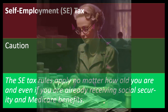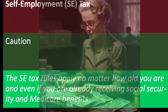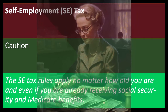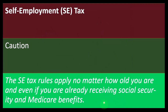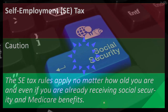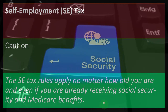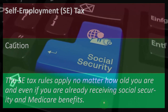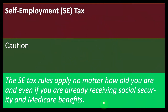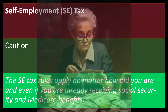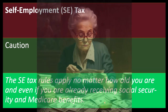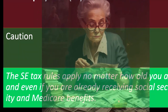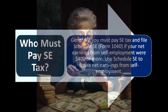Social Security is essentially a government program that everyone pays into for partial retirement income. If you put money into Social Security, you expect something in return, though for younger individuals that's less certain given the program's long-term funding challenges. Here we're talking about paying into the Social Security system when you have your own business — not through payroll taxes, but through the self-employment tax.